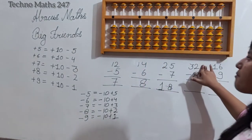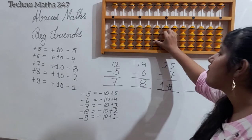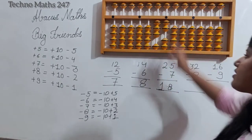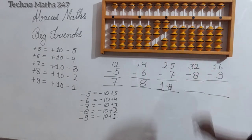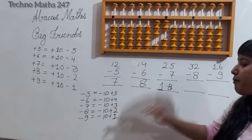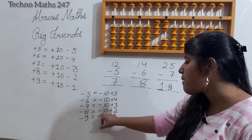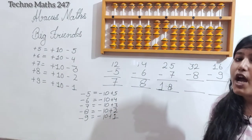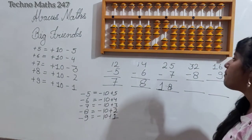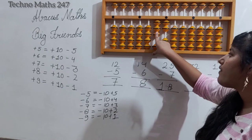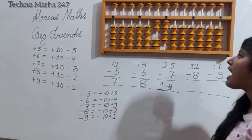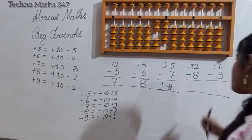Next question: 32 minus 8. We place 3 on the 10's rod and 2 on the 1's rod, giving us 32. For minus 8, the big friend is minus 10 plus 2. We apply minus 10 plus 2, and the answer is 24.